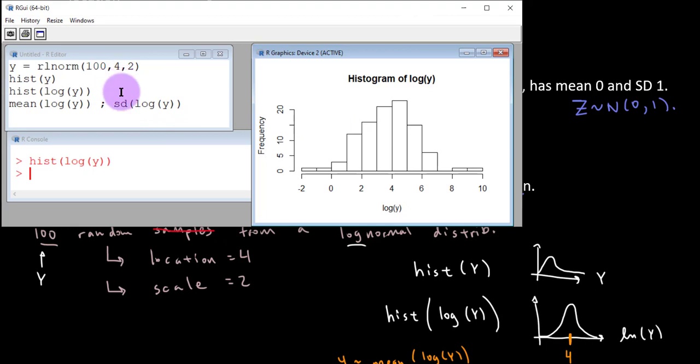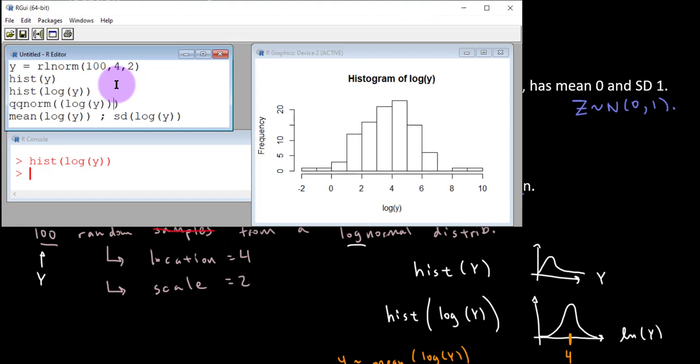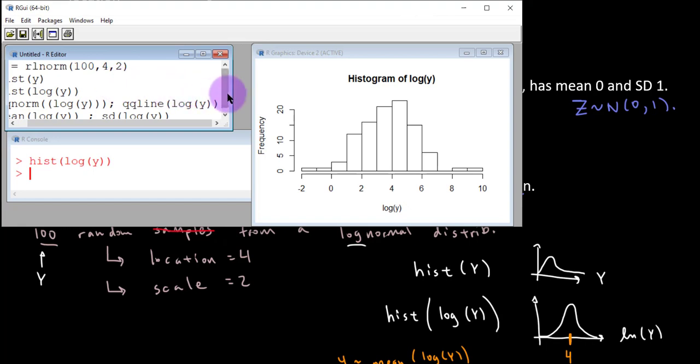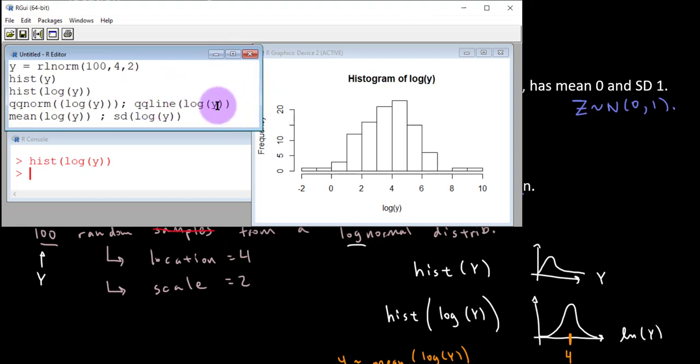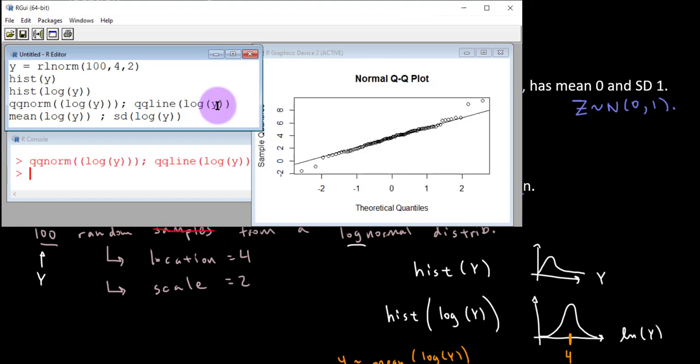We've got another tool that we can look at. Couldn't we do the QQ norm of the log of Y and perhaps the QQ line? And we should see if the log of Y is normally distributed, we should see an approximate straight line.